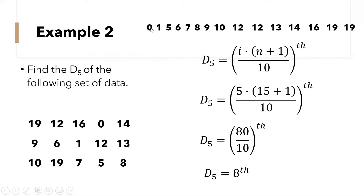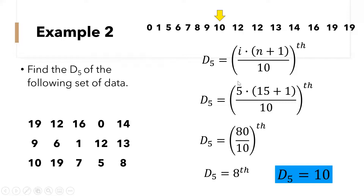So where is the 8th data? Let us count: 1, 2, 3, 4, 5, 6, 7, 8. And decile 5 is 10.